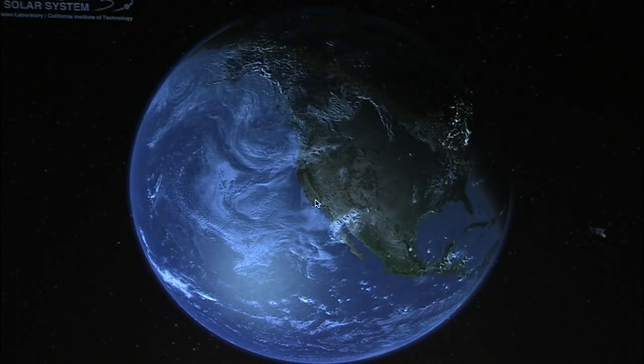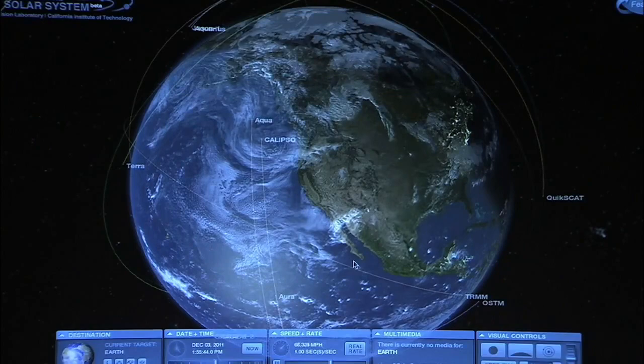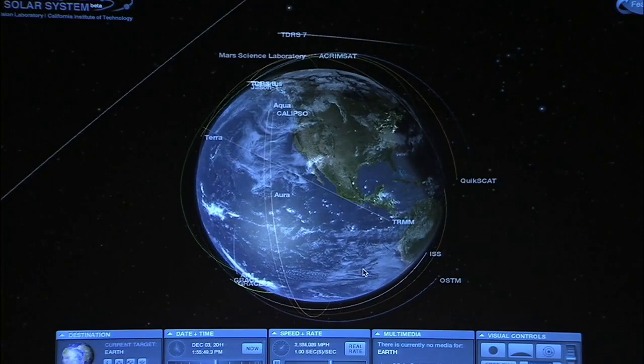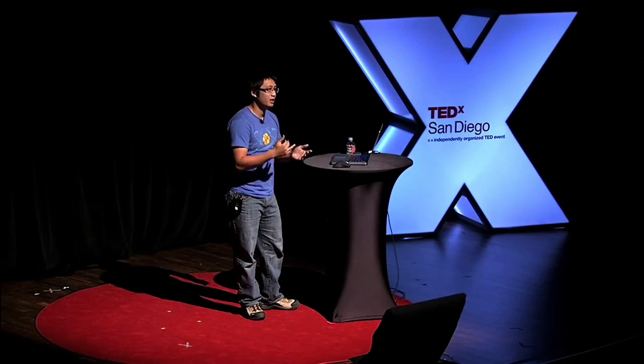The Earth is cool, but what we really want to show are the spacecraft. Now you're looking at a number of satellites orbiting the Earth — these are our science-based Earth orbiters. We haven't included military satellites, weather satellites, communication satellites, and reconnaissance satellites. If we did, it would be a complete mess, because there's a lot of stuff out there.